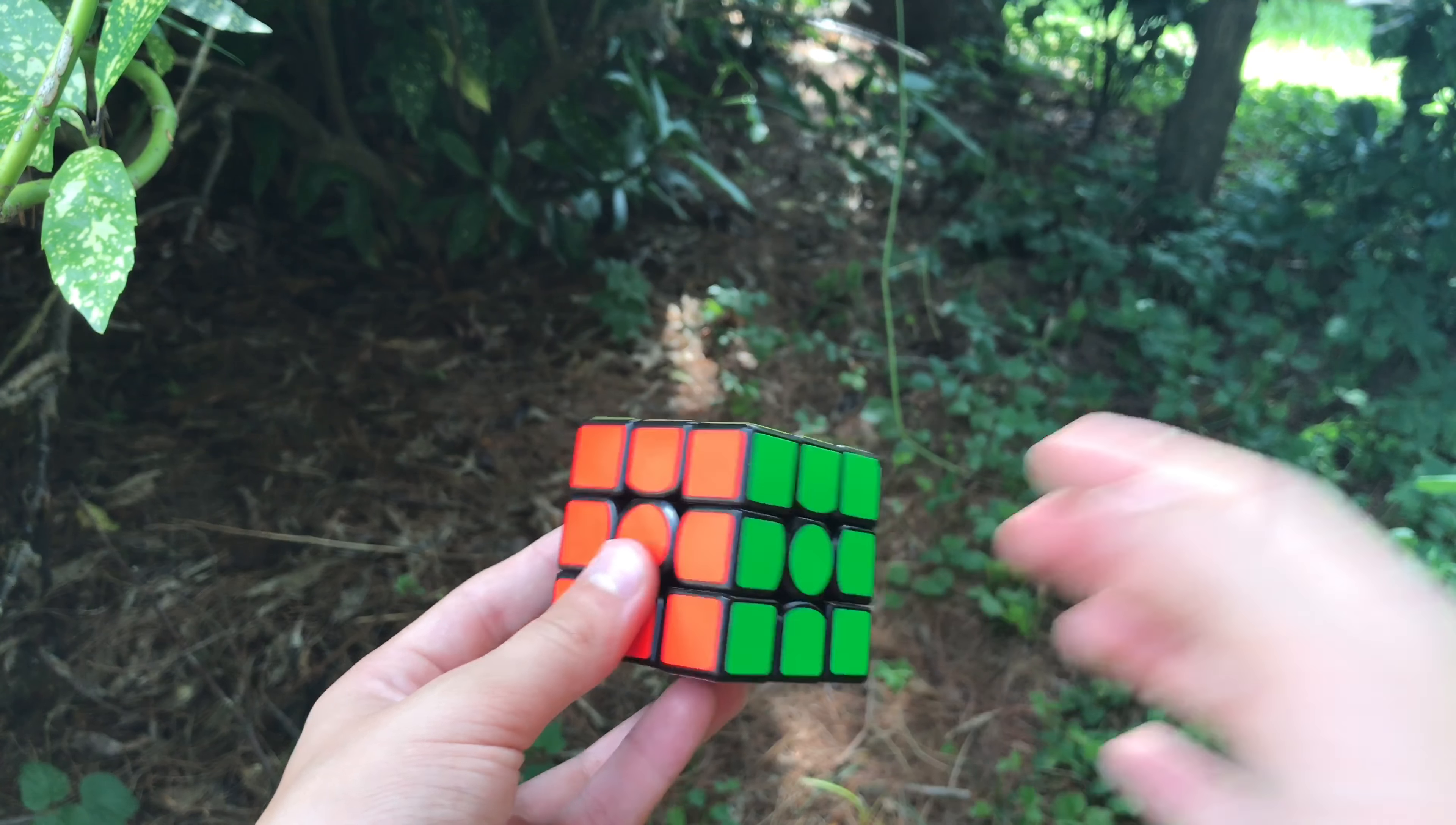Alright, now on to the corner cutting. The corner cutting on this puzzle is great. It can do pretty much anywhere you put it. If it doesn't go one way, it'll go the other. So if you reverse cut it too much, it'll do a forward cut. And if you forward cut too much, it'll just do a reverse.